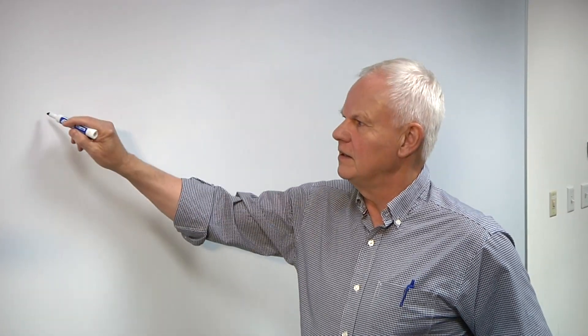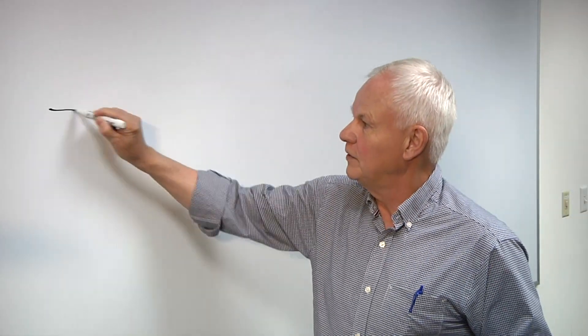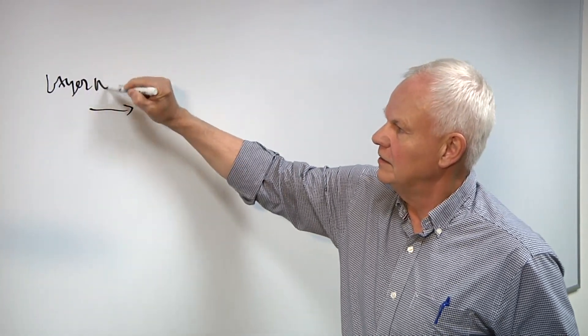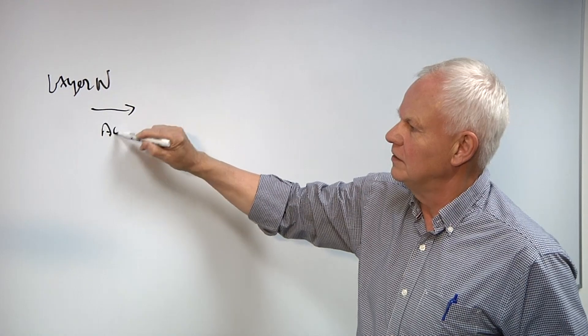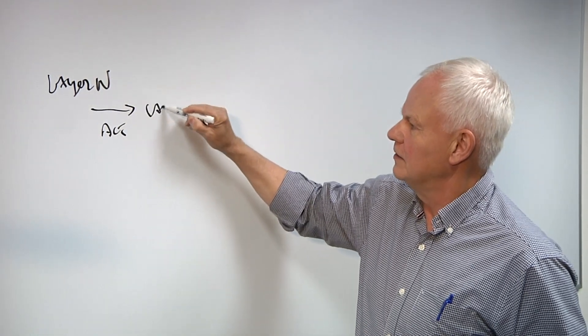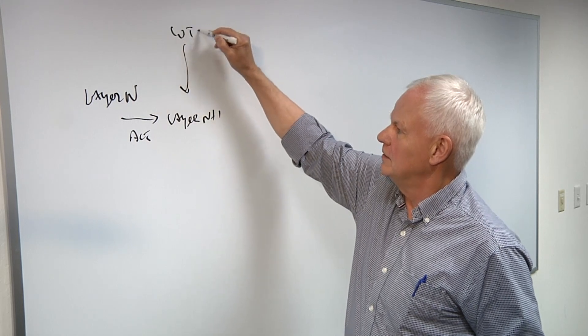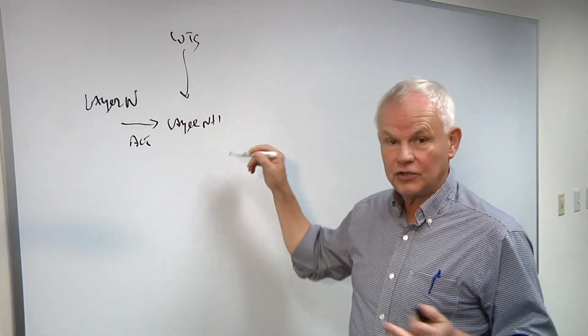And each layer is taking in an activation from the previous layer. So layer N, the output of it is an activation, which goes into layer N plus 1, waits for that layer to come in. A computation is done,